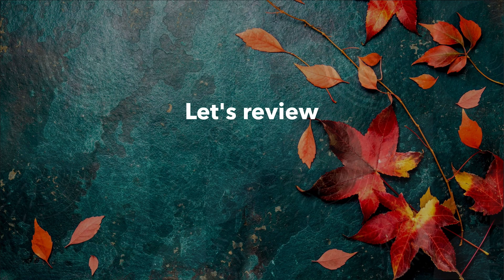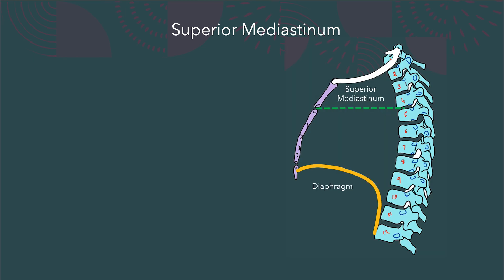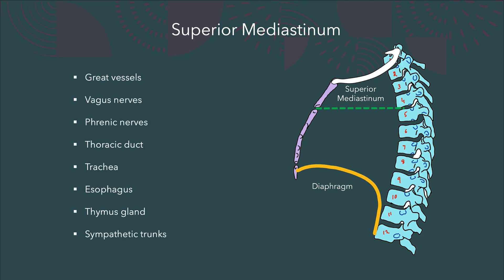Now let us review the superior mediastinum, above my imaginary plane. The structures present in this location are: the great vessels, vagus and phrenic nerves, thoracic duct, trachea, esophagus, sympathetic trunk, and the thymus gland if it is present.